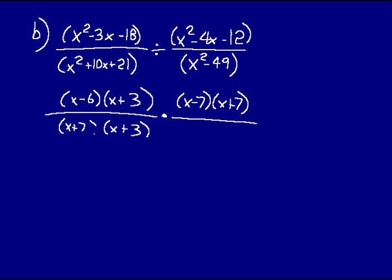And then X squared minus 4X minus 12, we just need to factor that out. That will be minus 6 and positive 2: X minus 6 times X plus 2.